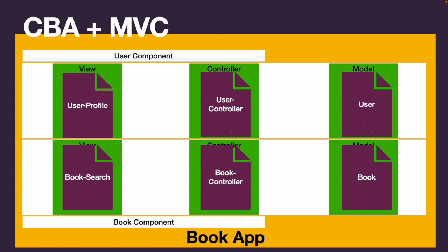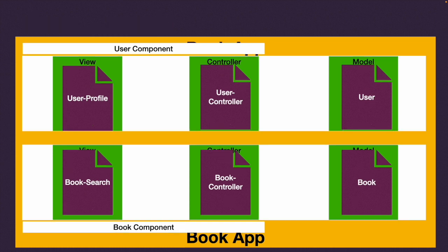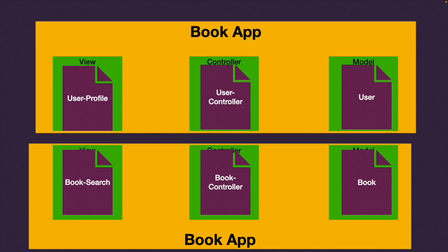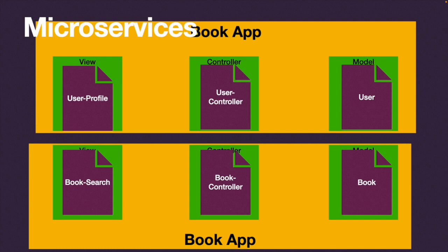That's how a component-based architecture combined with MVC looks. Let's take it one step further. If we start separating things a bit more, we could move these components away and separate them into two apps. Instead of two components in the same app, it could just be two apps. This is what we call microservices. Instead of one book app, we have a user service and a book service. We're still using MVC inside the microservice - no one says you have to, but it often makes sense.